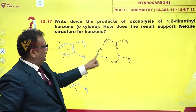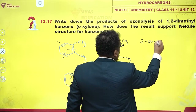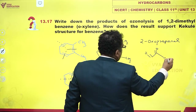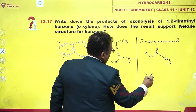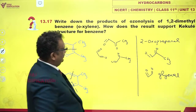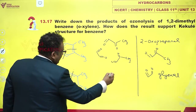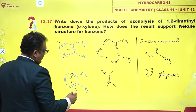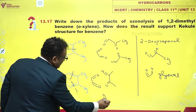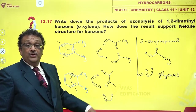Please note these two are the same, so you obtain 2-oxopropanal. There are two products like this — this is glyoxal. What about the other Kekulé structure? In that case, you would obtain two moles of glyoxal. In addition to glyoxal, you would also obtain butanedione.